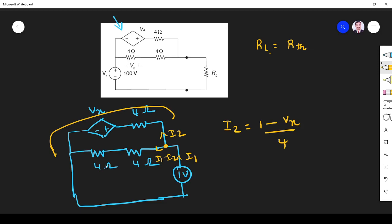So here minus plus Vx. So Vx is equal to... This is 4 ohm. This is 4 ohm. V is equal to I into R. So 4 into... Current flowing through this 4 ohm is I1 minus I2. So 4(I1 minus I2). So this is equation 1. This is equation 2.